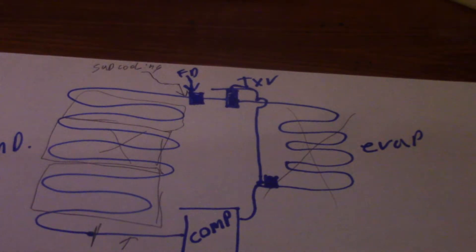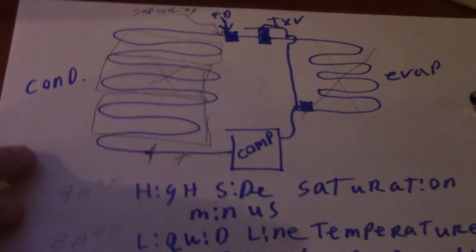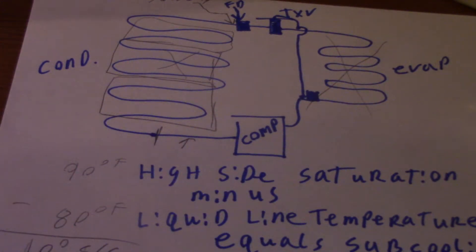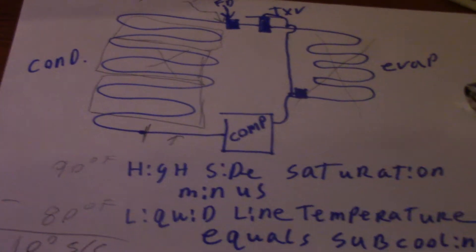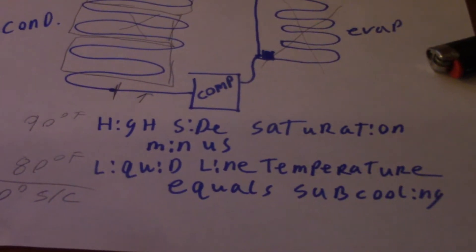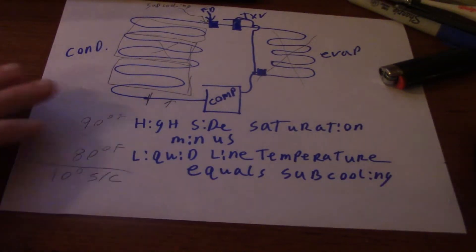If you don't follow the formula that we have stated there, high side saturation minus liquid line, and try to do, say, a big number minus little number deal, well, you'll calculate the wrong information.